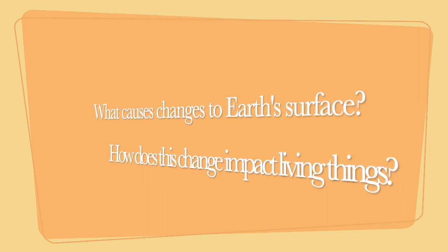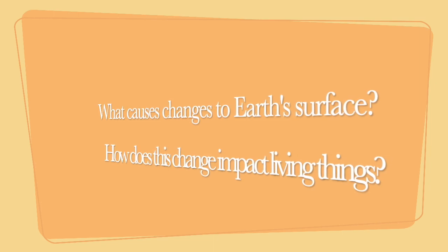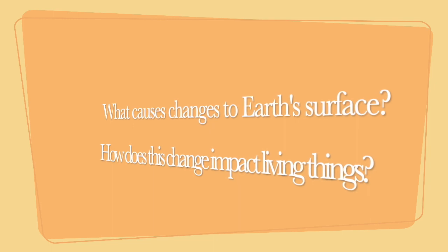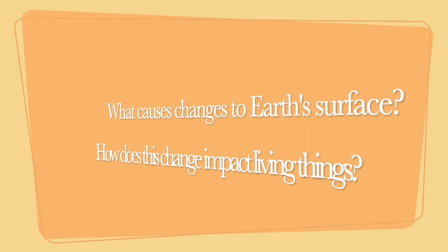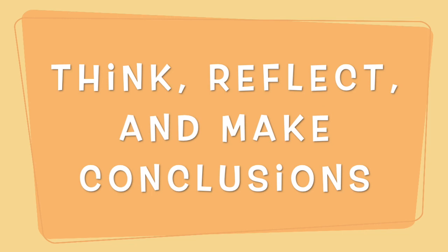So far we have answered one part of our inquiry question, which is what causes changes to earth's surface? How does it happen that the surface of earth changes? Now we are going to focus our attention on the second part of our inquiry question, which is how does this change impact the living things? Now I can tell that living things that live in areas that have glaciers must depend on this snow and this water to survive.